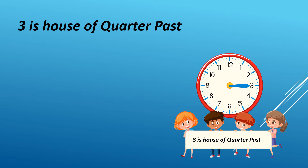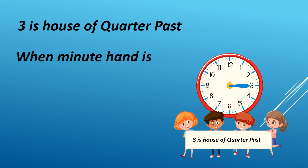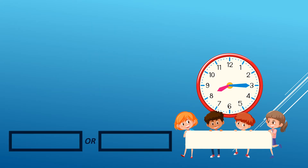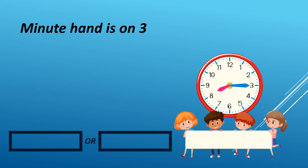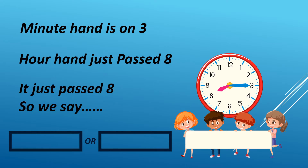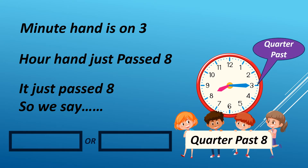3 is the house of quarter past. Three members were there and the name of the house was quarter past. When the minute hand is on 3, we always say quarter past. When the minute hand is on 3 and the hour hand just passed 8, we say quarter past 8.